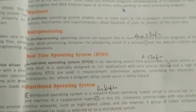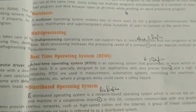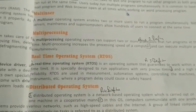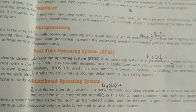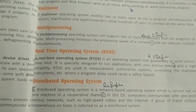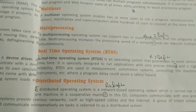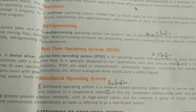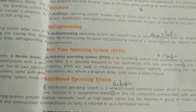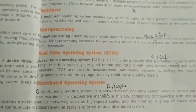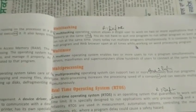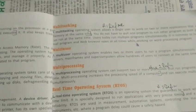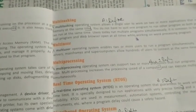Next we have real-time operating system. A real-time operating system is different from other types. It is a data processing system in which the time interval required to process and respond to input and output is very small, controlling the environment. The best examples are artificial intelligence and traffic light signals. In the book it is given as automation system for controlling machines.